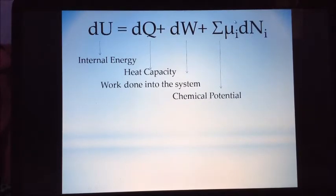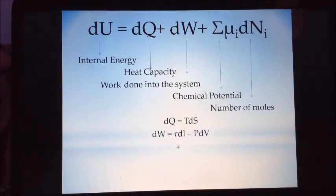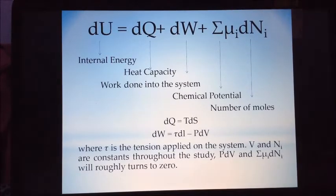dq is defined as tds, wherein dw is defined as tau dl minus pdv, where tau is the tension applied on the system and v and ni are constants throughout the system. pdv and summation of mu i d ni will roughly turn to zero, so dq is equal to tds plus tau dl.